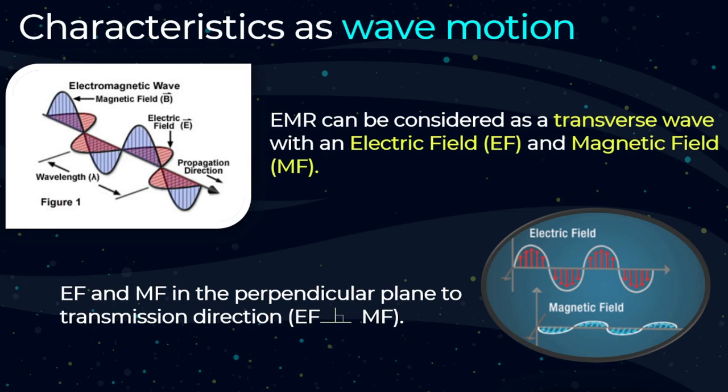Let's have a look at the characteristics as wave motion. Electromagnetic radiation can be considered as a transverse wave with an electric field and a magnetic field. As you can clearly see in the left side of the figure, the electric field and the magnetic field are in the perpendicular plane to the transmission direction. That's why we call it a transverse wave.